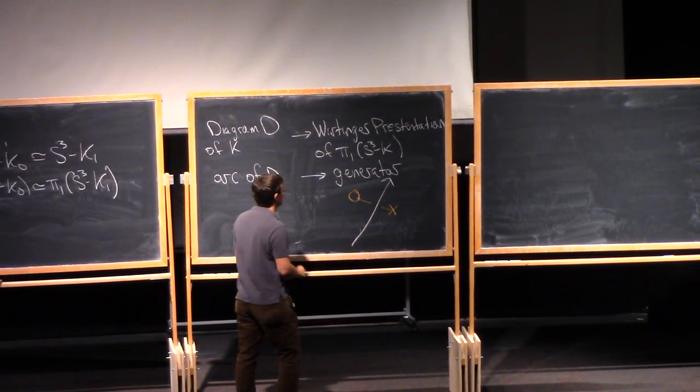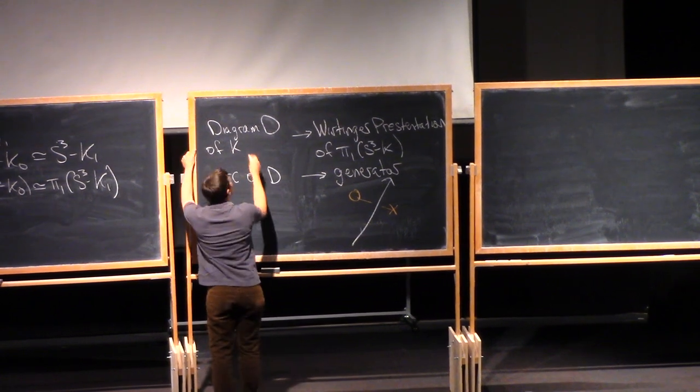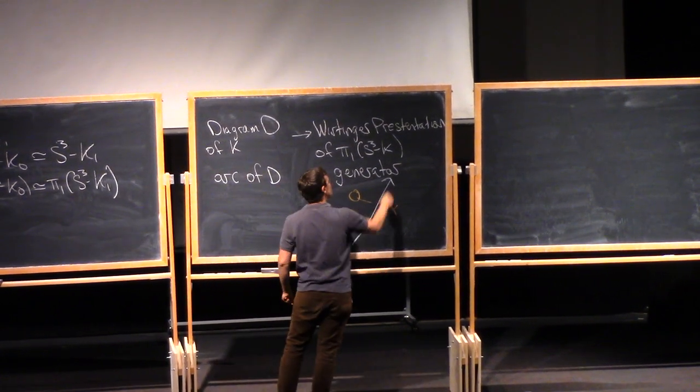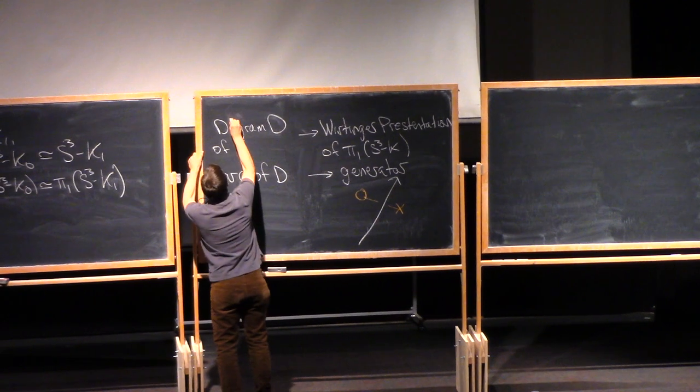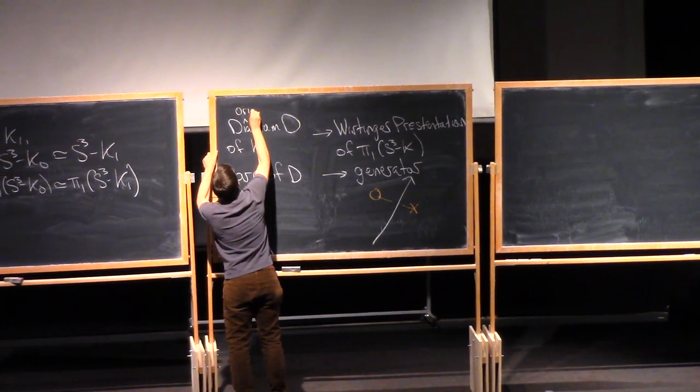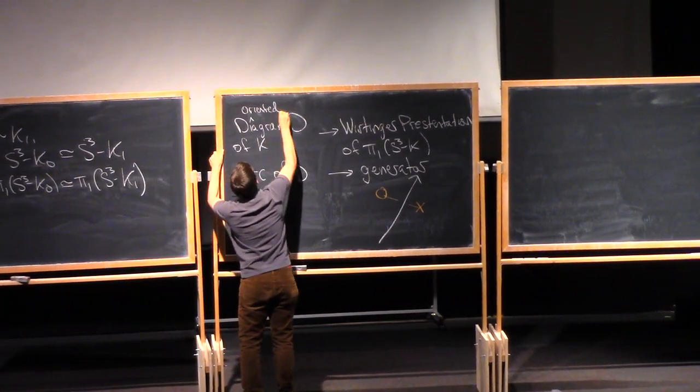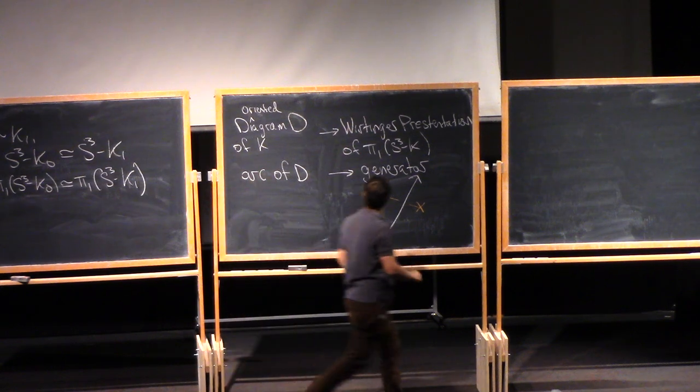So here's my arc. I haven't written down my base point in pi-1, which is always a dangerous thing to do, but I'll continue to do it. So really the base point for this presentation is out at the back of the room. And so the generator associated to this bit of arc comes in from the back of the room. I'll throw an X here to indicate that it's coming in this way, goes underneath the arc and then goes out by this O, back out to the back of the room. And really, I should have said, how do I know which way I was going here? I chose an orientation. So this was an oriented diagram D.